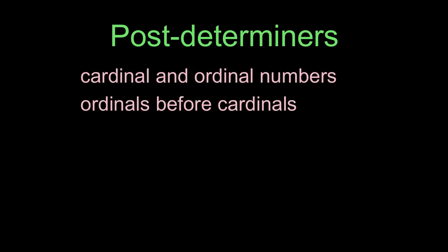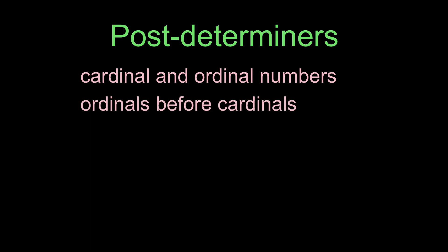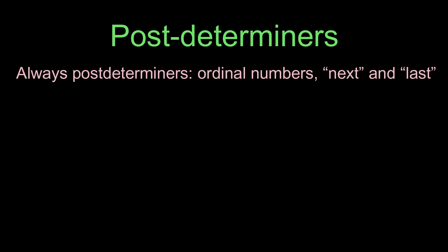Post-determiners: Determiners that occur after the main determiners are called post-determiners. Examples of post-determiners are cardinal and ordinal numbers. Cardinal numbers are used in all forms of counting that involve a total. Ordinal numbers are used to talk about where something is placed in an ordered sequence. Ordinals come before cardinals. For example: 'The two socks,' 'The first two socks,' 'My first impression,' 'Her 80th birthday,' 'The last meeting,' 'His previous email.'